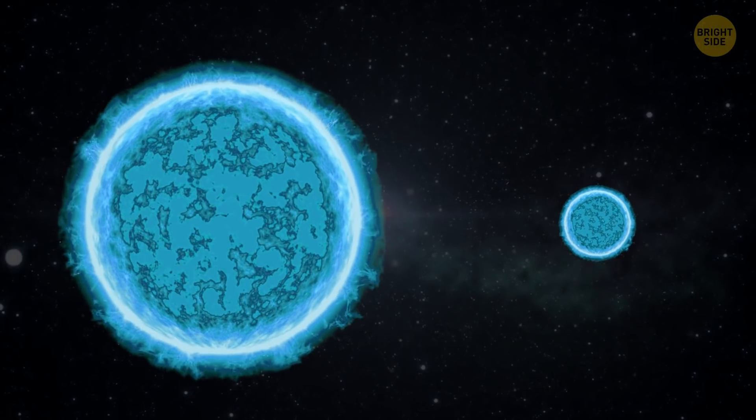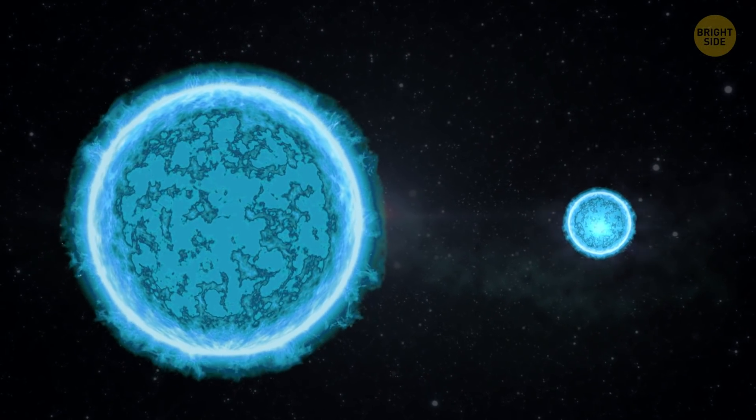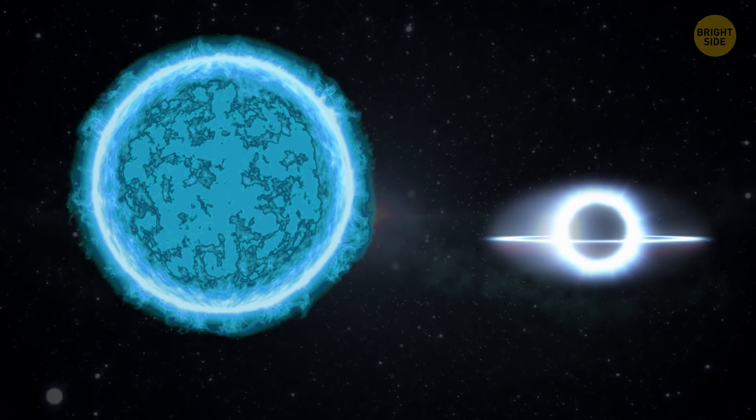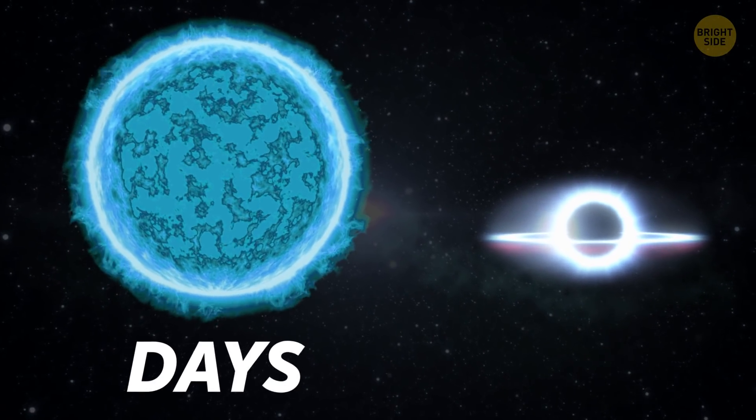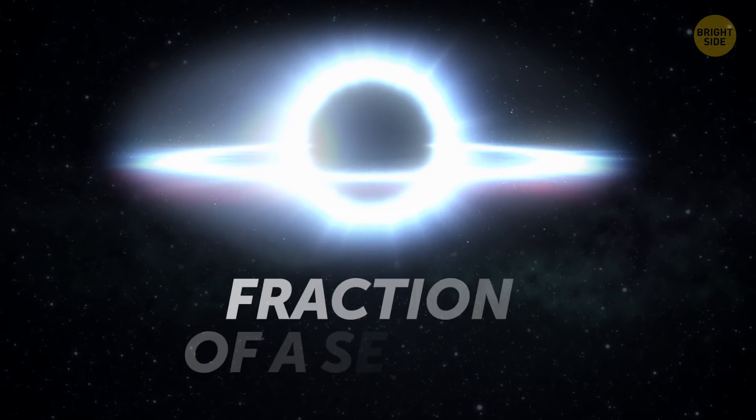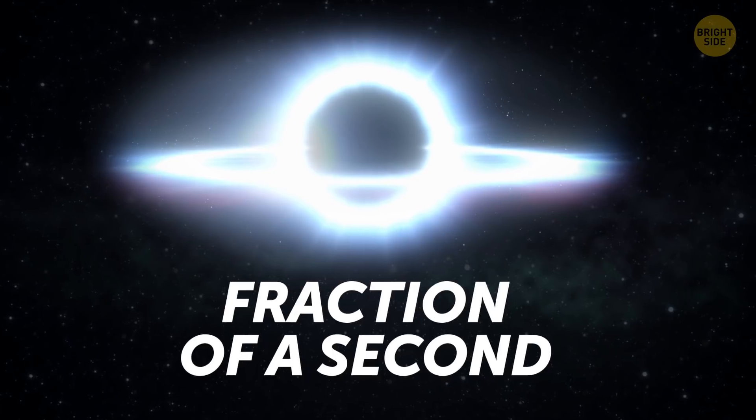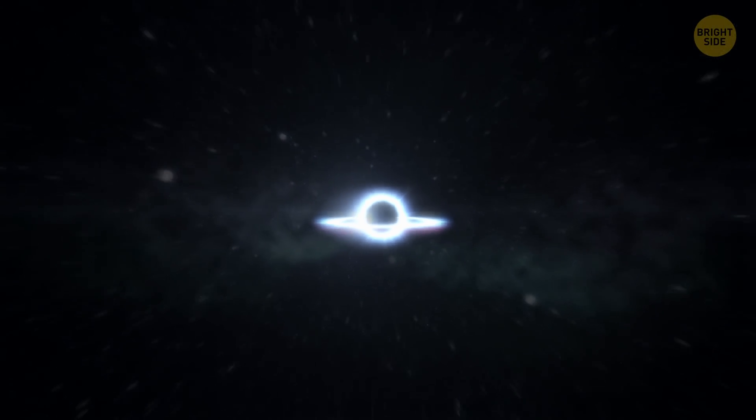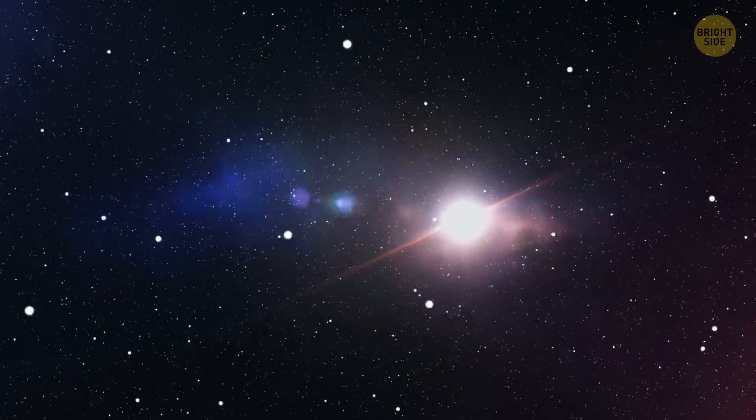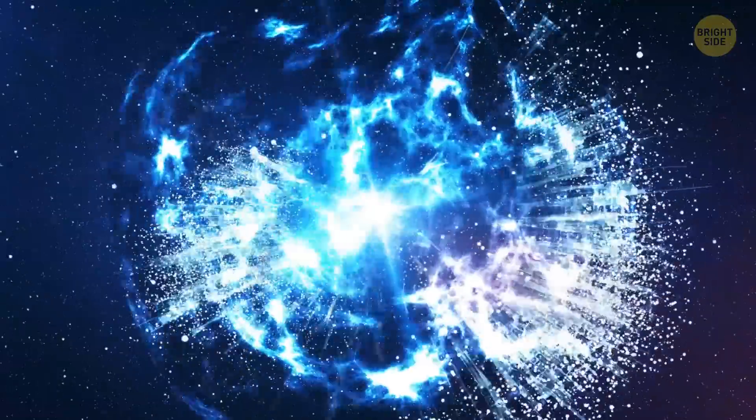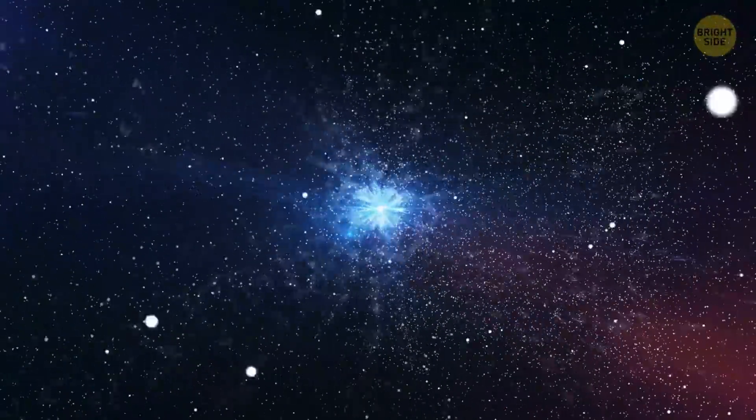The thing is, larger neutron stars can survive longer before collapsing. With especially huge stars, the process can take hours or maybe even days. But the star I just told you about ceased to exist in a fraction of a second, which made astronomers conclude that it was a baby-sized neutron star. However unfortunate the crash was for the two stars that collided that day, it shed some more light on the mysterious nature of neutron stars.